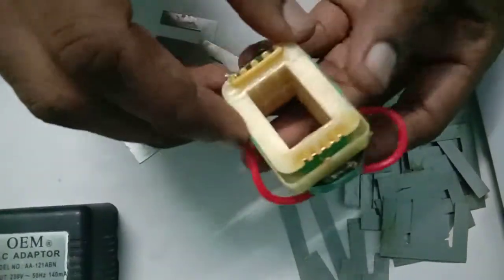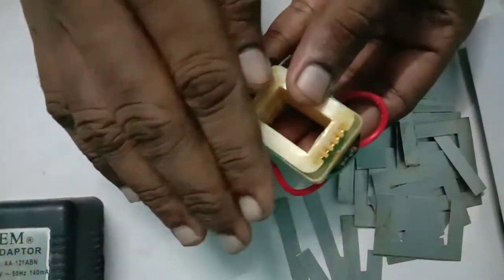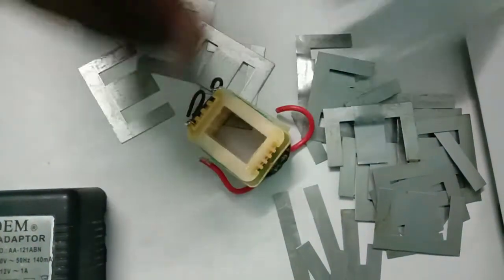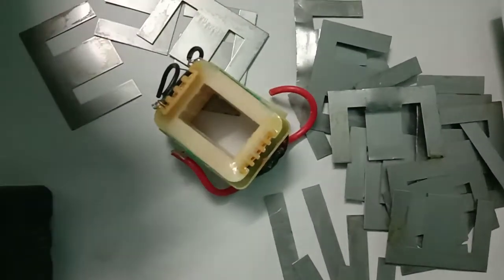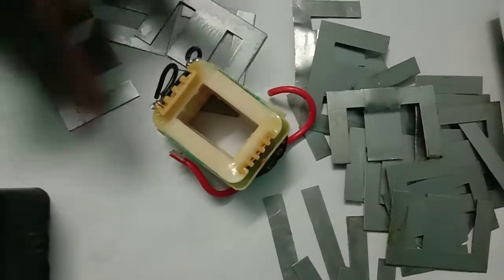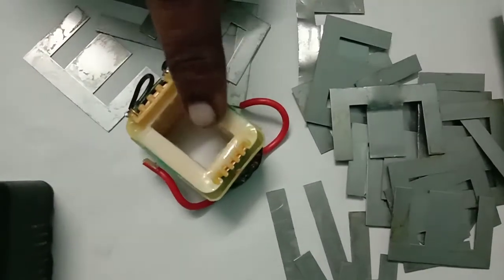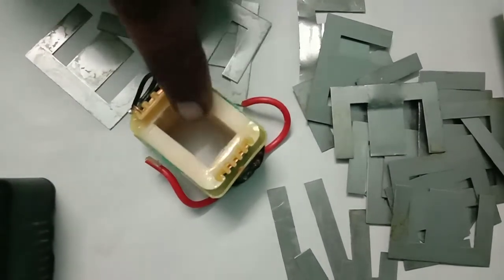So this is a shell type transformer. Shell type in the sense that we can connect either your core will be surrounded by the winding or winding will be surrounded by the core. Based on the application whether you are going for high power rating or low power rating we will define the transformer construction in terms of core type, shell type and berry type. This is a shell type transformer because your core is surrounding the windings.